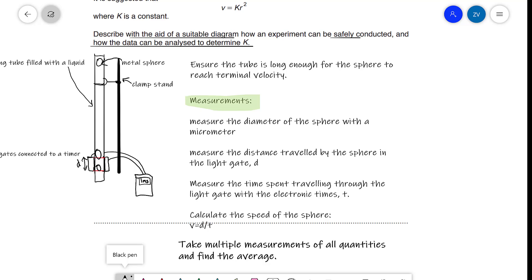Okay, we're also going to be measuring the time spent traveling through the light gate with the electronic timer, and this will be given the symbol t. We'll be able to calculate the speed of the sphere then, just simply using that V is equal to distance over time. And a really important tip for all six marker questions that involve an experiment would be to simply always write down the statement that we're going to be taking multiple measurements of all the quantities and then finding the average. Remember, anytime we take multiple measurements, we are minimizing any random errors that might be occurring during our experiment. And this is a really important part.